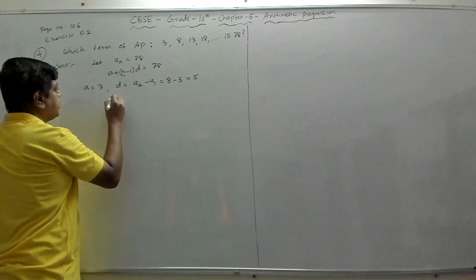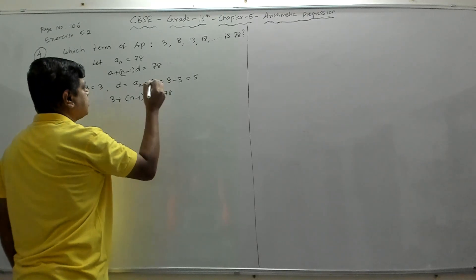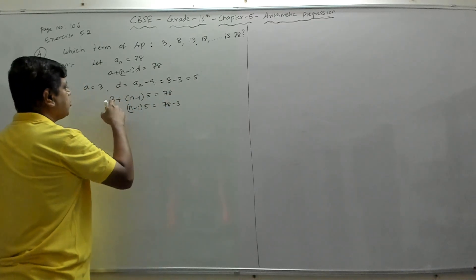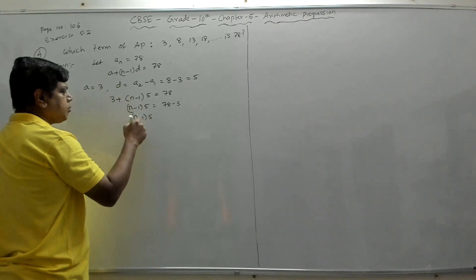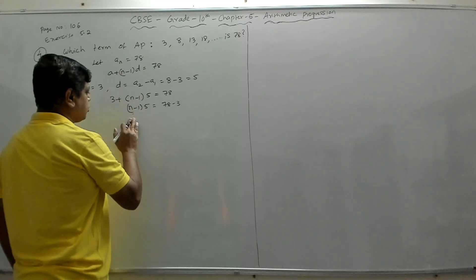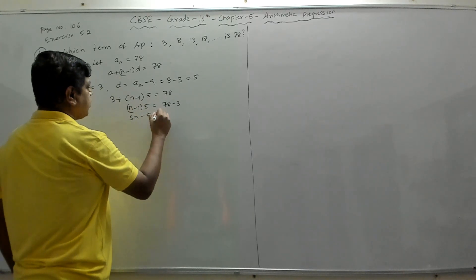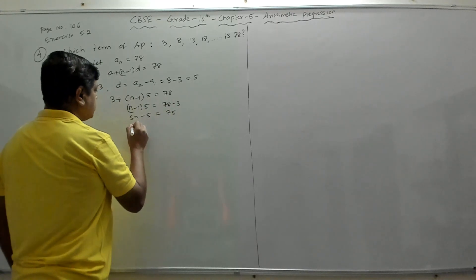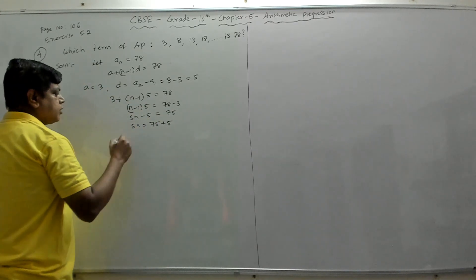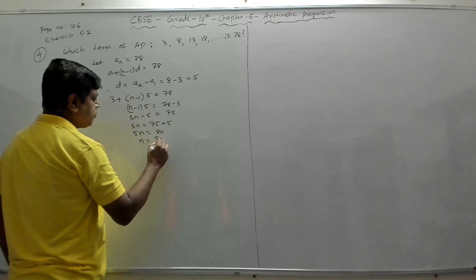So we get (n−1) × 5 = 78 − 3 = 75. Expanding: 5n − 5 = 75, so 5n = 75 + 5 = 80, therefore n = 80 ÷ 5 = 16.